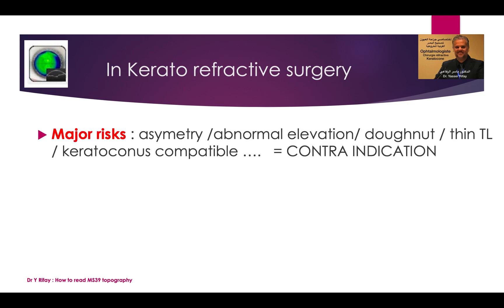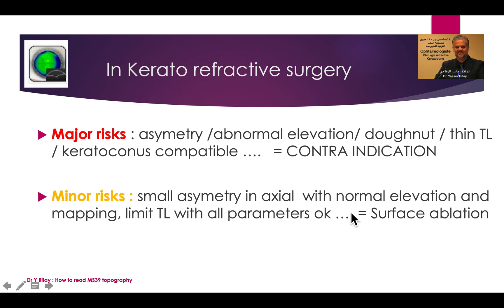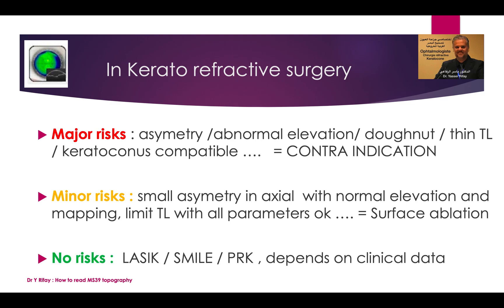When you have major risks — such as asymmetry, abnormal elevation, donut image, very thin cornea, and keratoconus compatible — you should contraindicate any keratorefractive procedure. When you have minor risk — a very small asymmetry in axial map with normal elevation and mapping, and limit thickness with all parameters okay — you can go for surface ablation. And if there is no risk, you can go for LASIK, SMI, or PRK, depending on clinical data and the surgeon's habits.